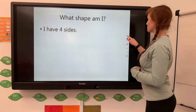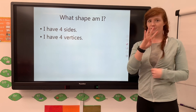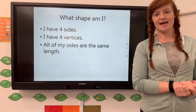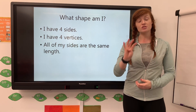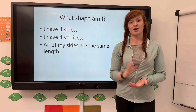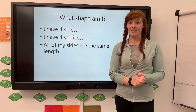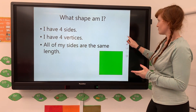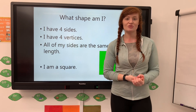Final one - I have four sides and four vertices. All of my sides are the same length. We had a similar one earlier with four sides and four vertices but two long and two short sides. This shape has four sides, four vertices, all equal in length. I am a square.